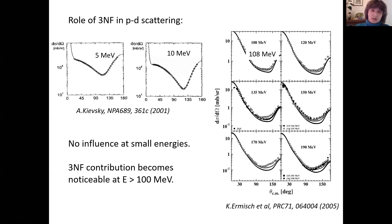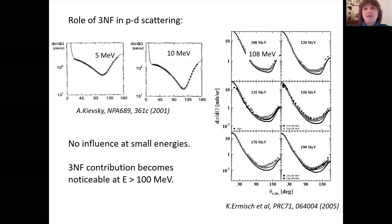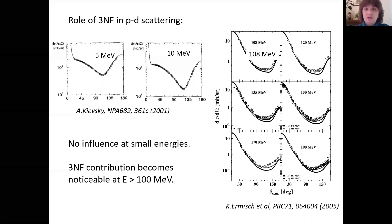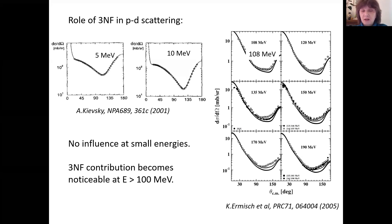However, for systems with more than four nucleons, the situation becomes different. Starting from five-body systems in the low-energy scattering region, we normally have resonances whose positions strongly affect the observables of elastic scattering and reactions. Taking nucleon force into account can change the positions of resonances and, as a result, change observables. One example is proton scattering on carbon-10, where adding three-nucleon force completely changes the angular distributions.